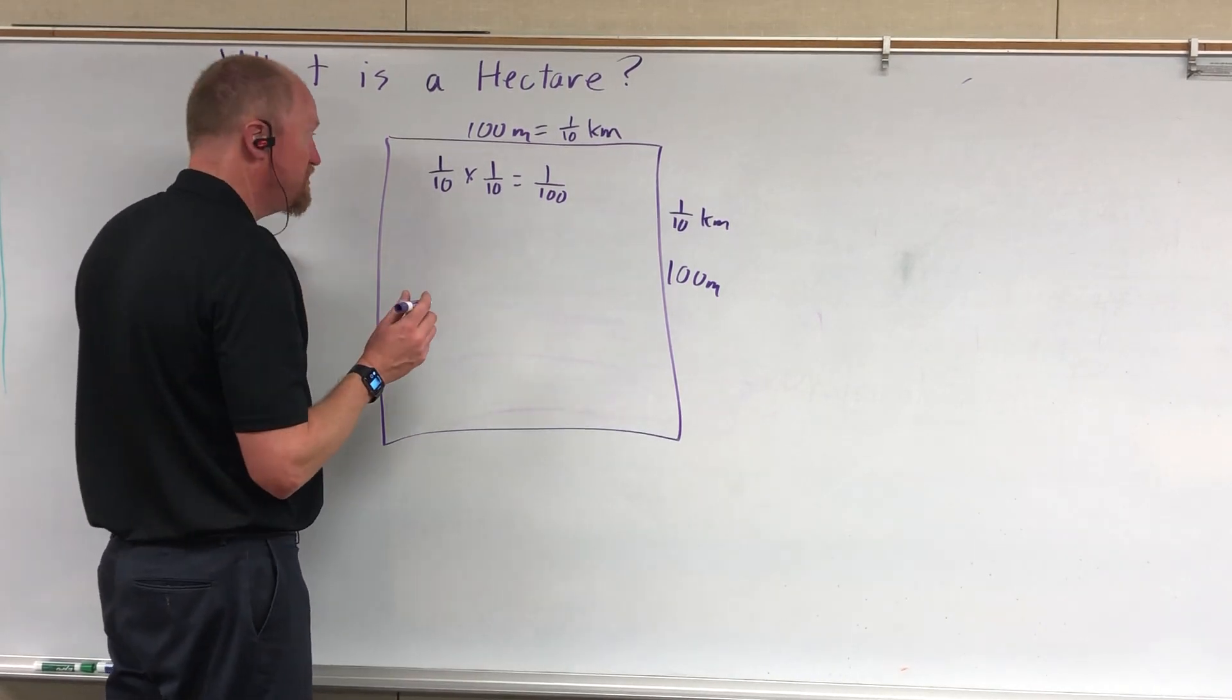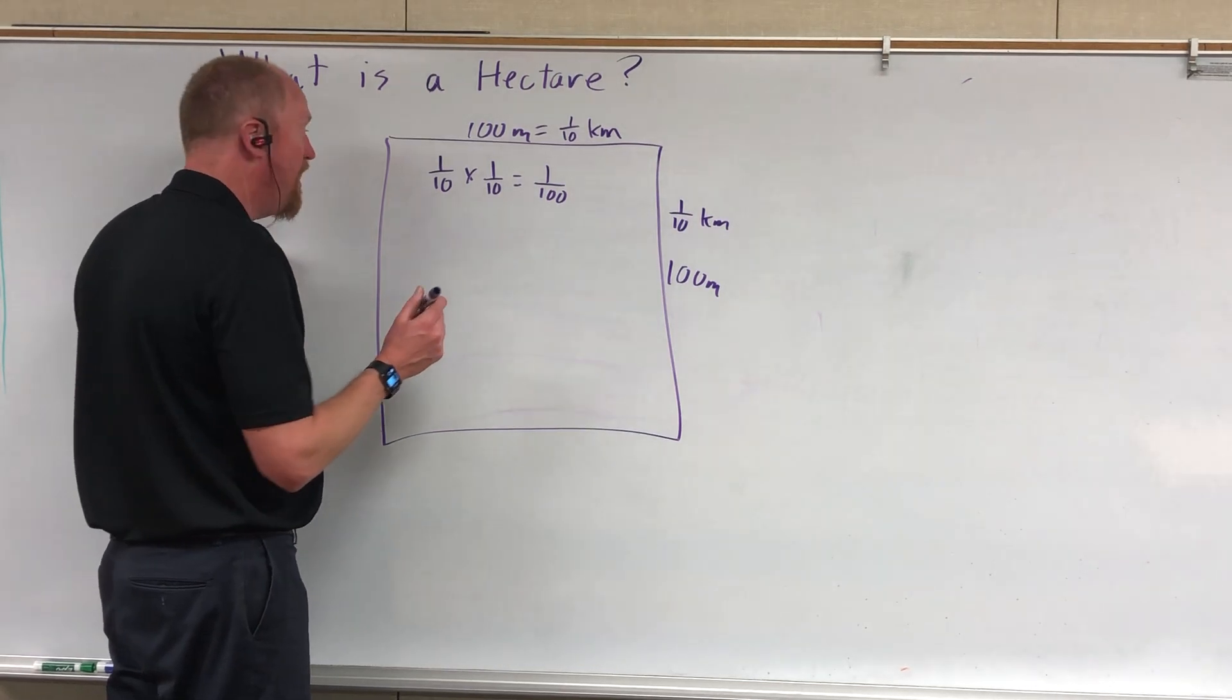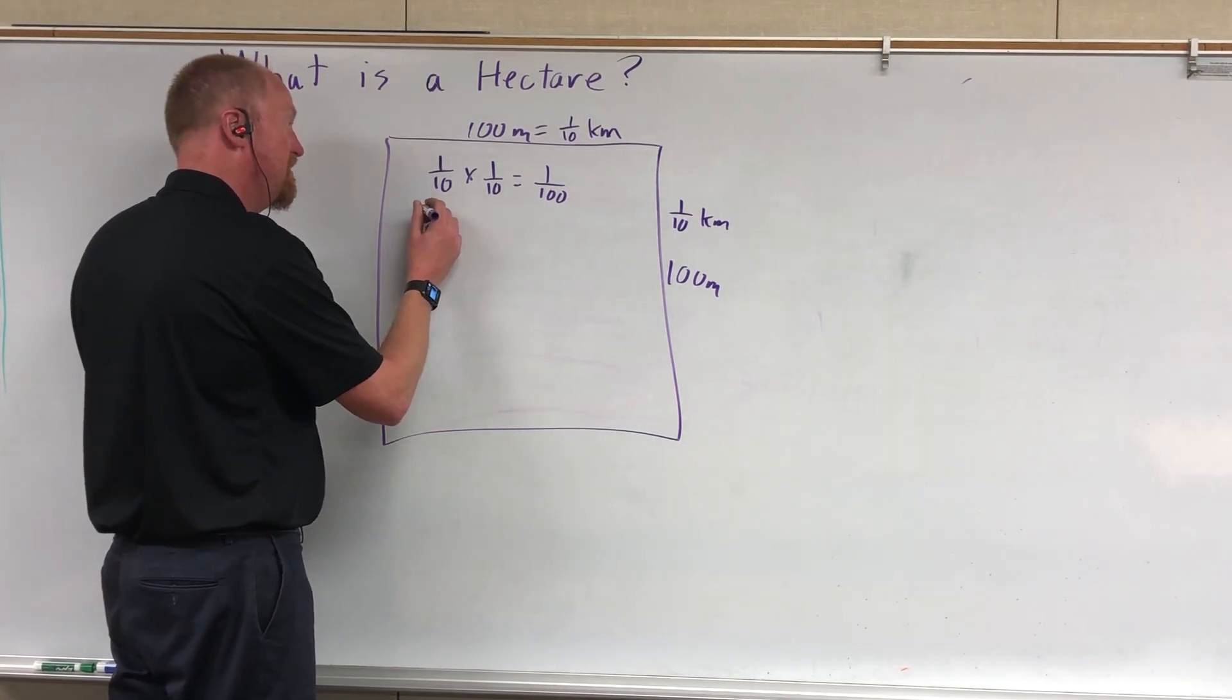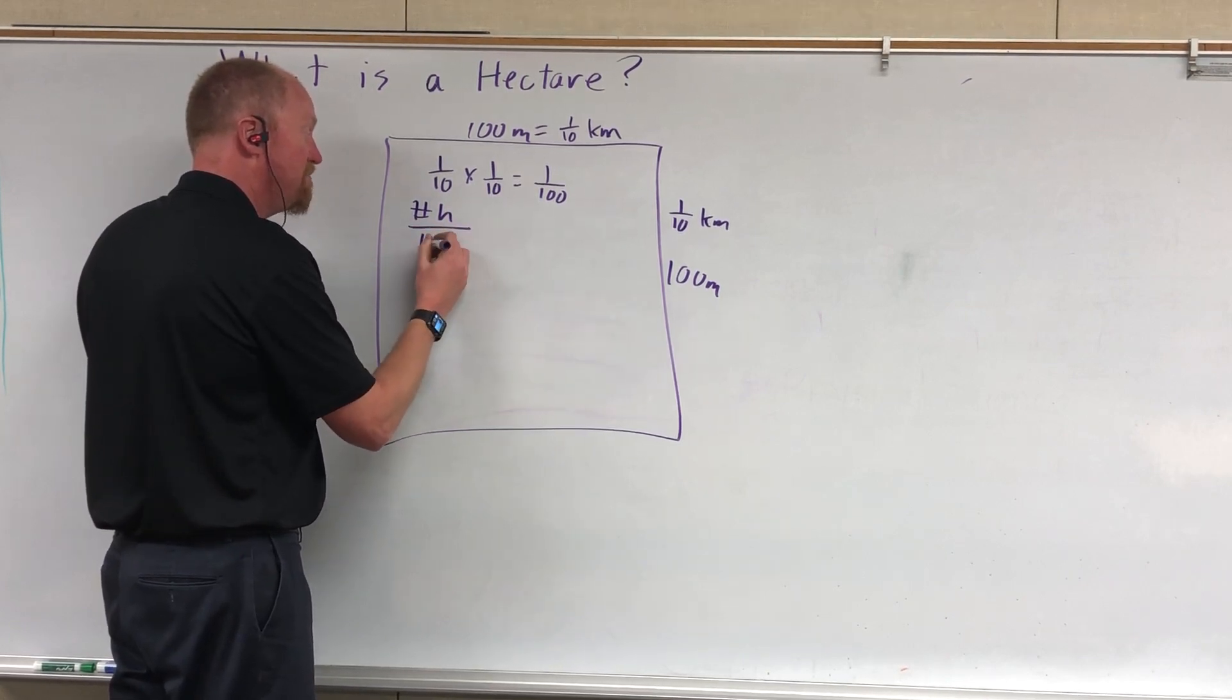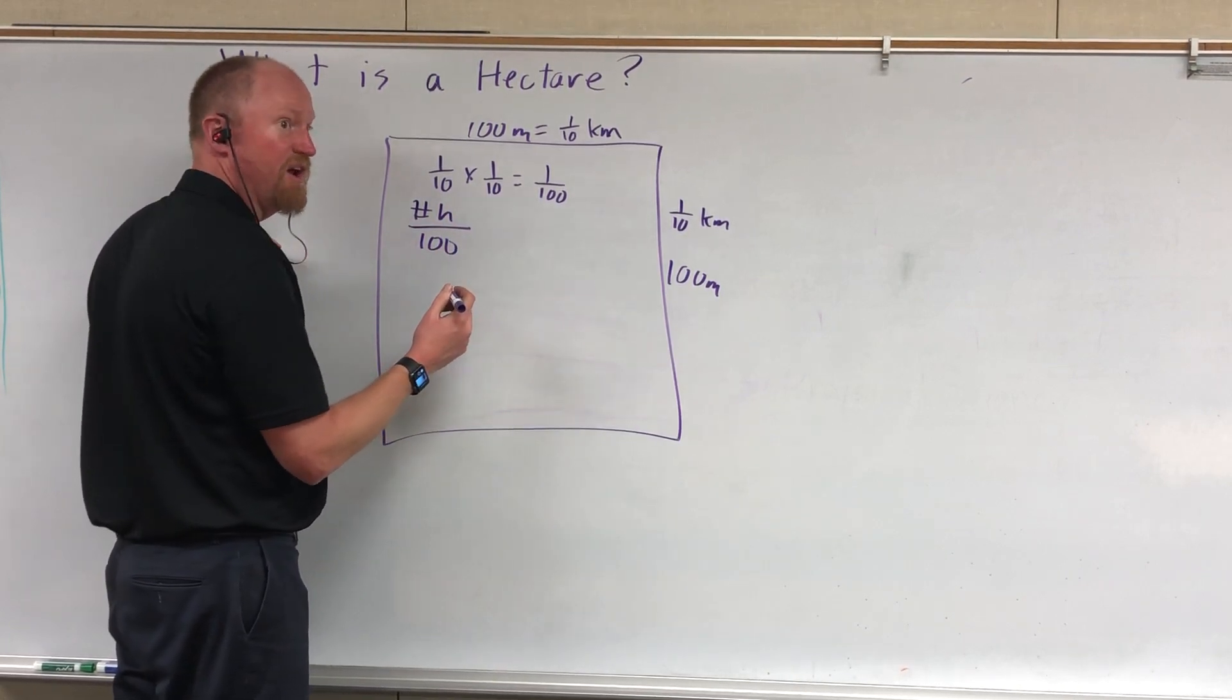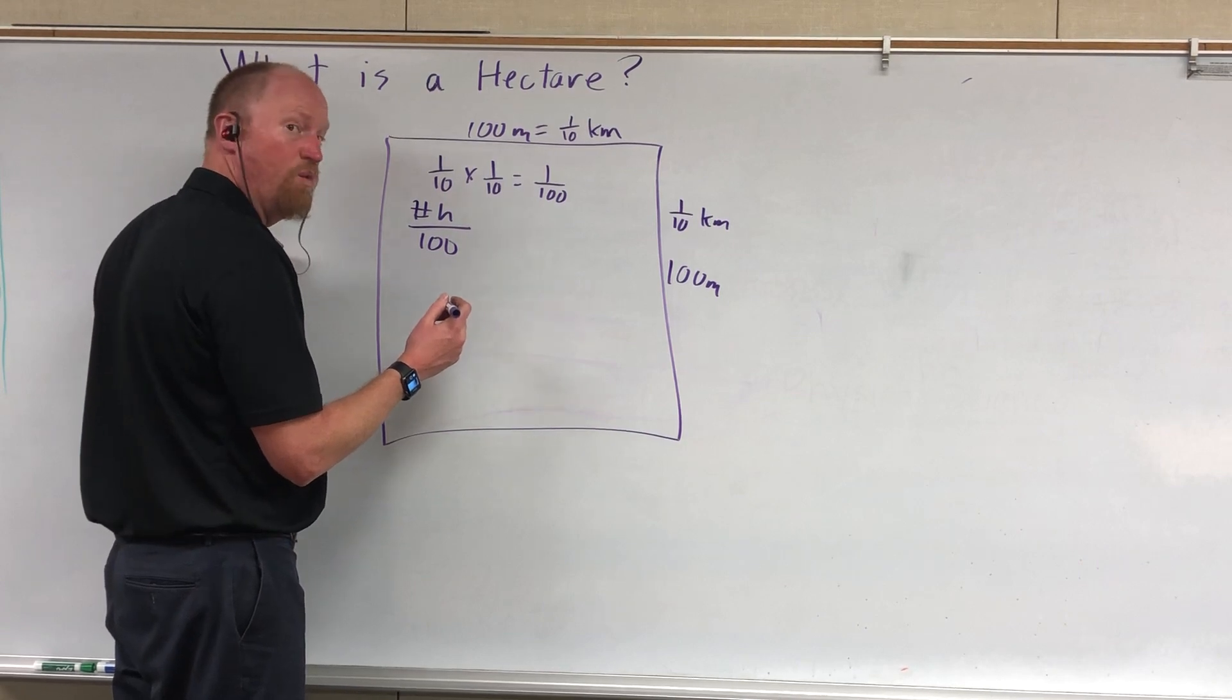So if you'd like to convert hectares into square kilometers, you simply take the number of hectares and divide them by a hundred. So if you've got a hundred hectares, that's one square kilometer.